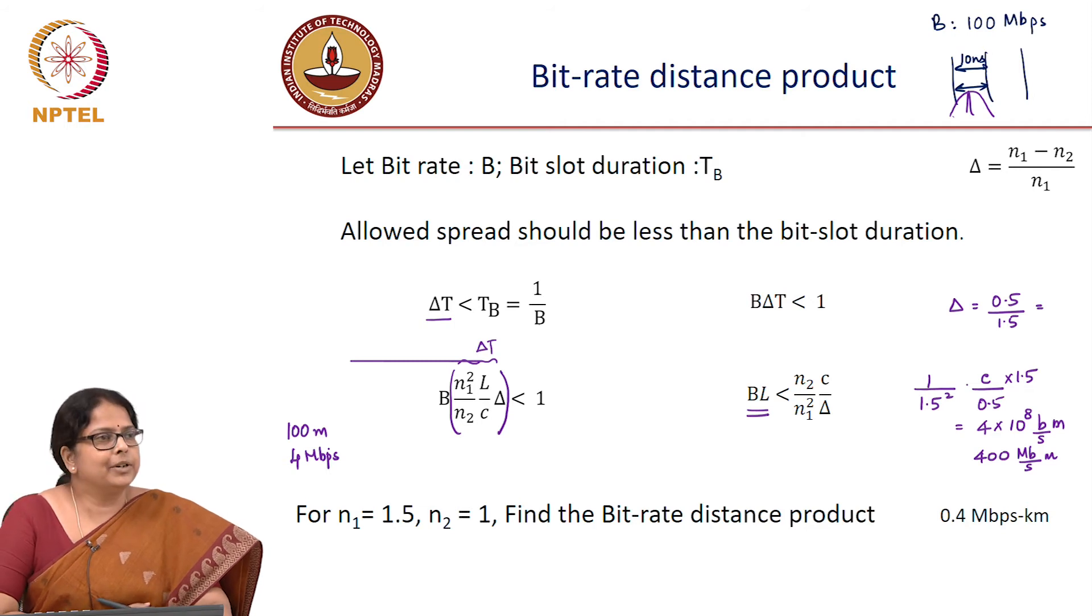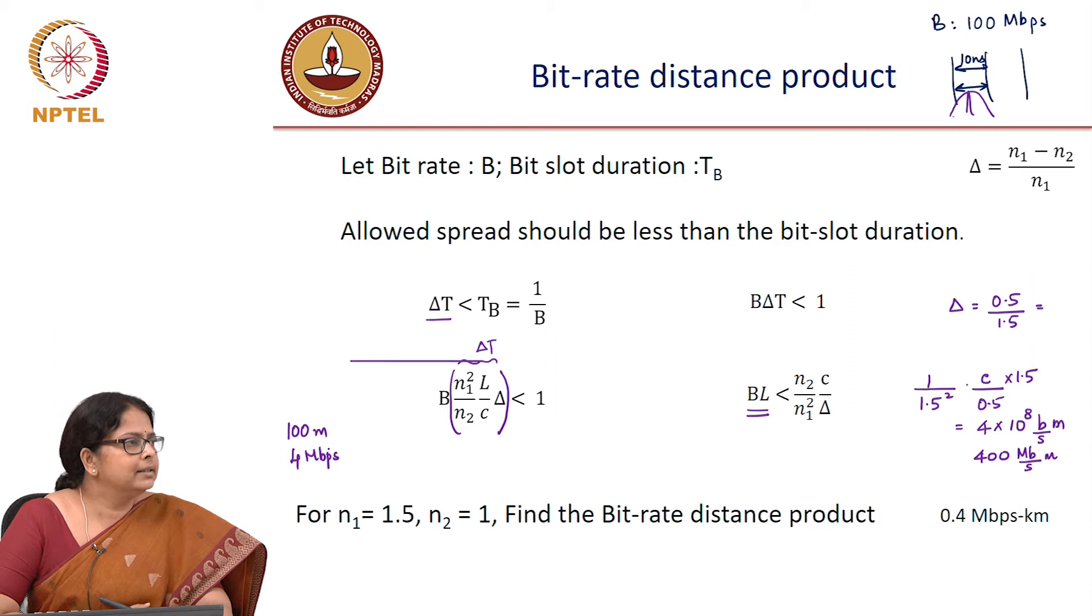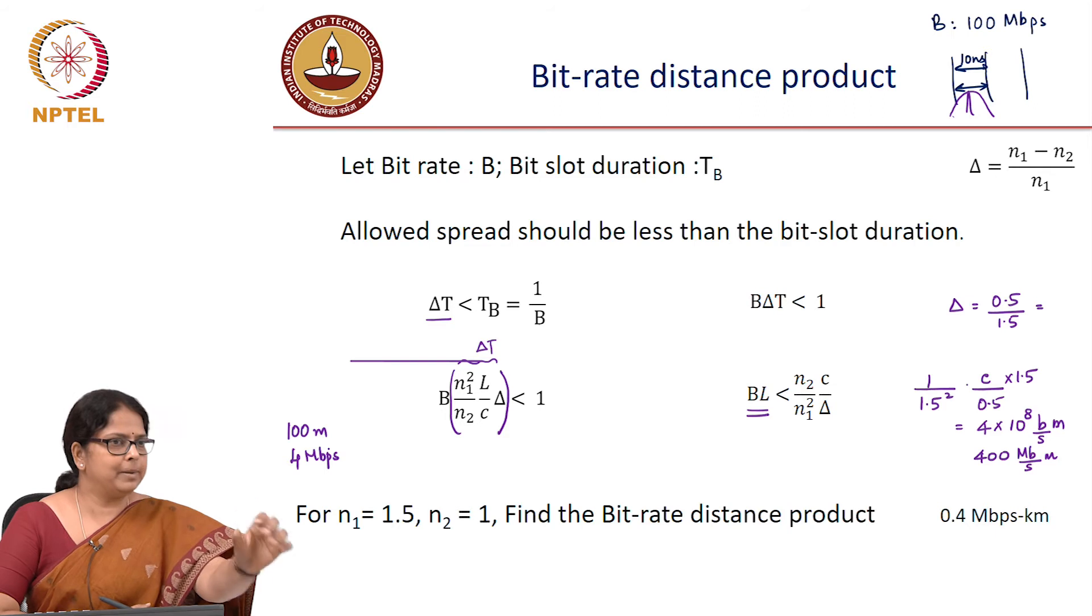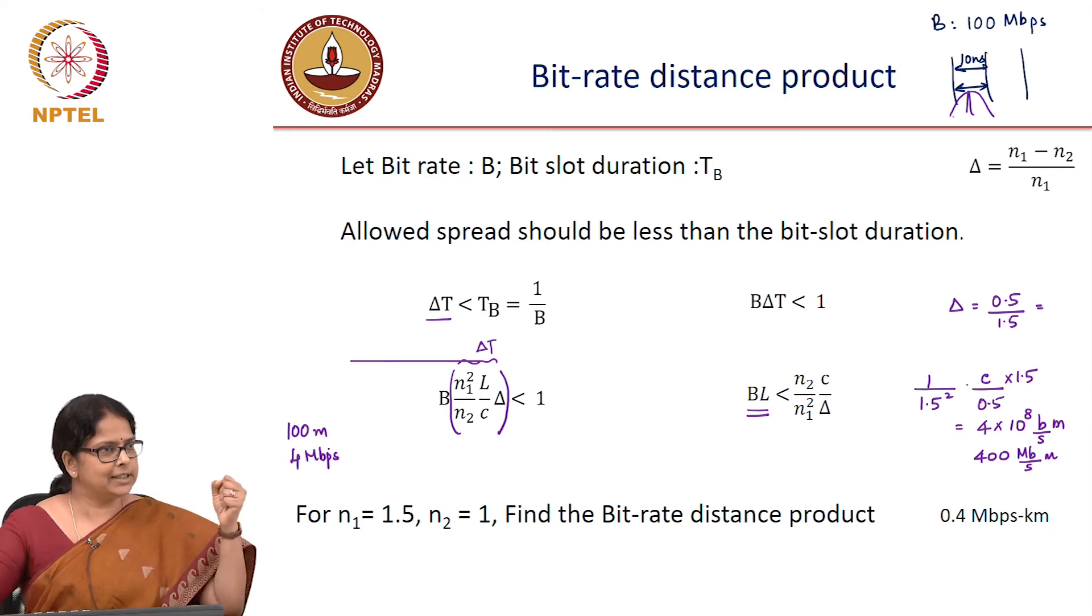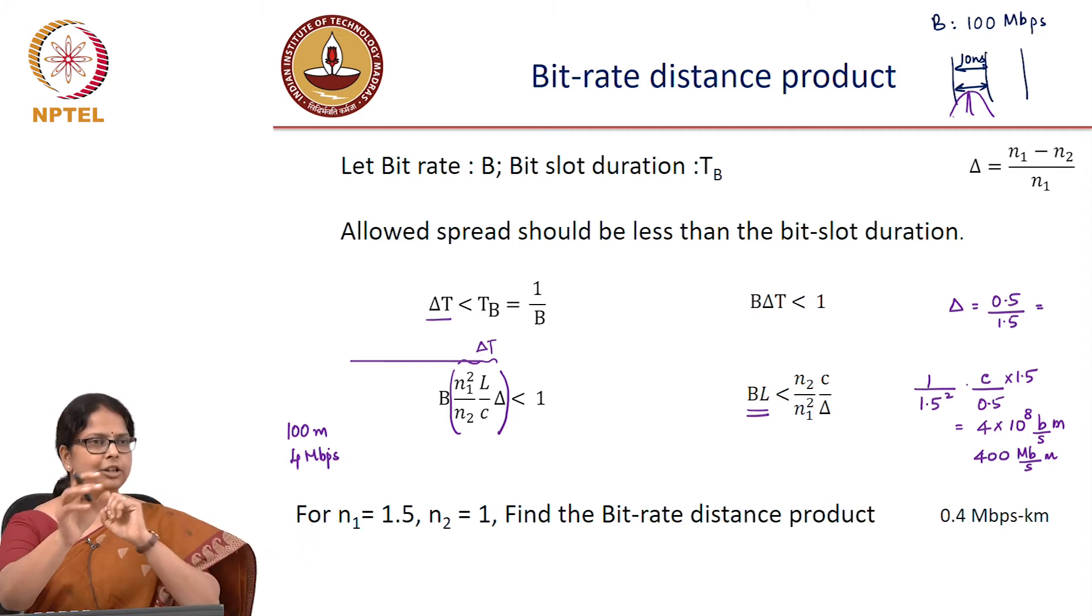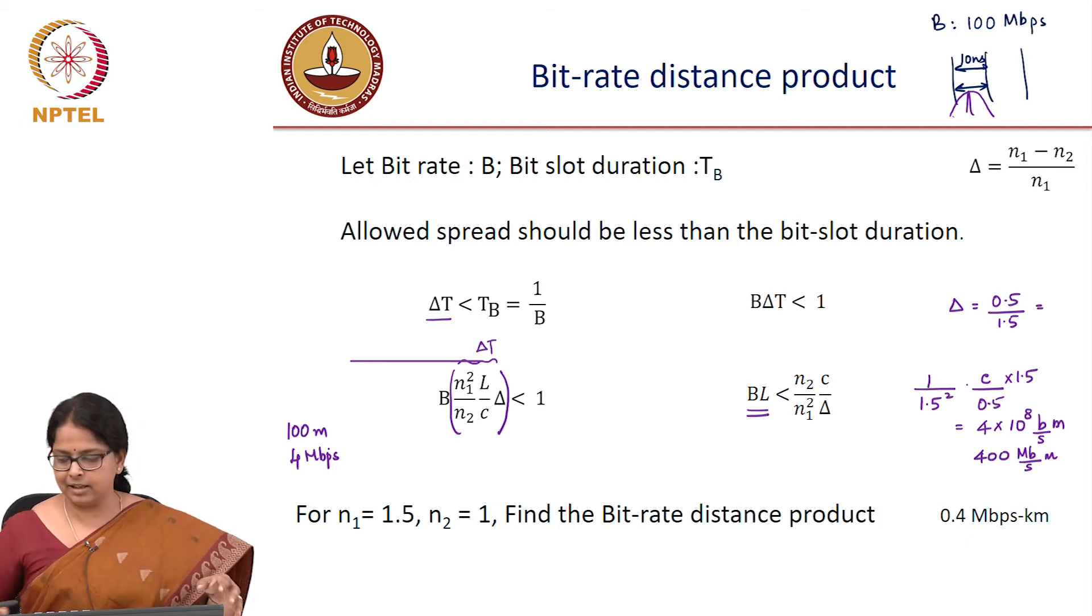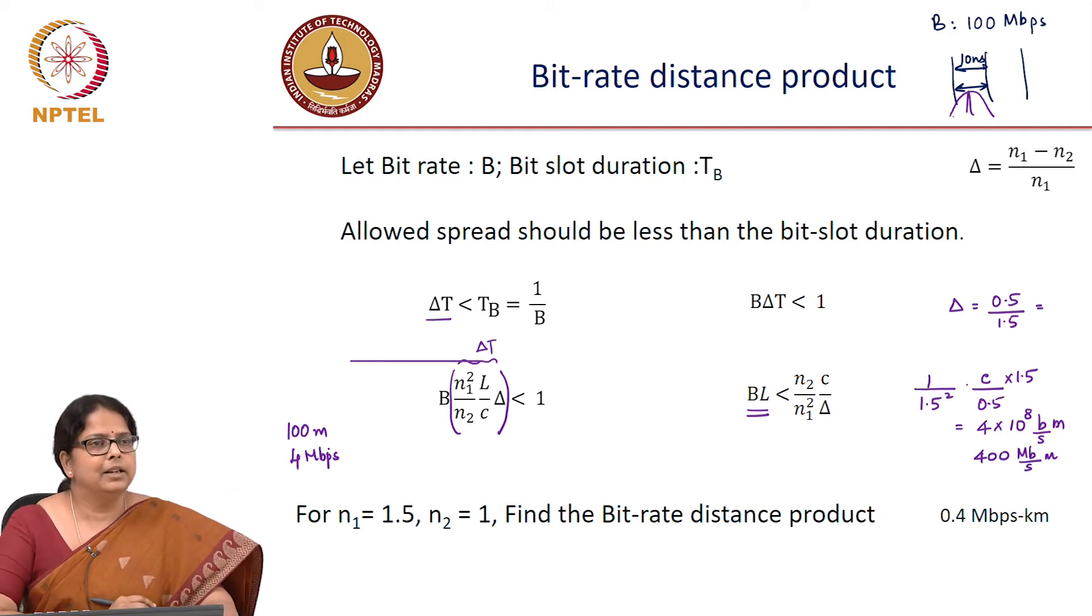Let us say we want to improve this. We want to improve this bit rate distance product. What is your first strategy? Now, you are a fiber designer, let us say. So N2 equal to 1 would mean cladding index is 1, which means that cladding is air. You just take a piece of plastic with refractive or glass, just take a piece of glass.